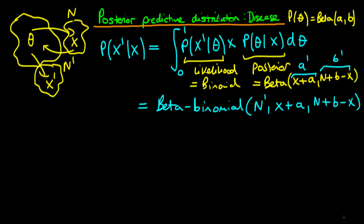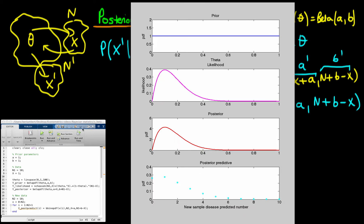I now want to go through using a MATLAB script exactly how the prior and likelihood, together with the posterior, lead to this posterior predictive distribution. Starting with a uniform prior, we have a completely flat prior over theta. The likelihood looks peaked at the maximum likelihood estimate — I've picked a first sample where 1 out of 10 individuals has the disease, so the likelihood peaks at 0.1. Multiplying prior and likelihood gives the posterior, which exactly mirrors the likelihood because the prior is flat.